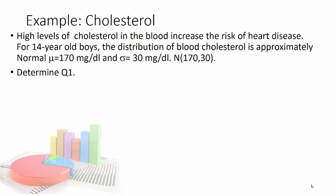High levels of cholesterol in the blood increase the risk of heart disease for 14 year old boys. The distribution of blood cholesterol is approximately normal. We don't have anything really normal just like your teacher is not really normal. And in this case the mean, that symbol right there is 170 and the standard deviation is 30. And we'll often write it where we say n for normal distribution mean and standard deviation. So we're going to go ahead and determine what Q1 is. So they want to know what is Q1. Well if I had a box and whisker plot this would be easy but I don't. So with a normal distribution I can still calculate it.